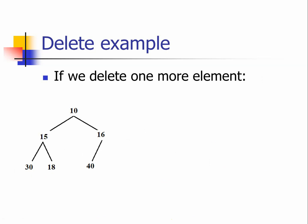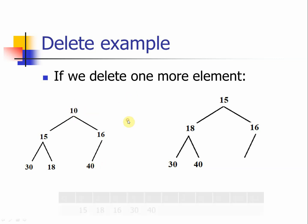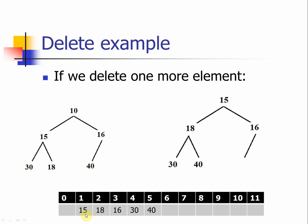If we delete one more element, it's the same thing — 10 is removed and we put 40 at the root. So we will have 15, 18, 16, 30, and 40, and of course there will be an empty spot, and that is how we do the delete operation.